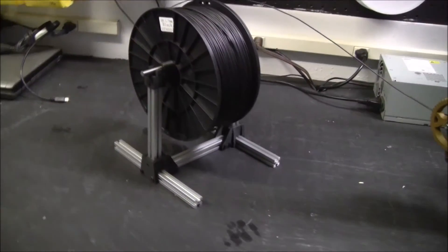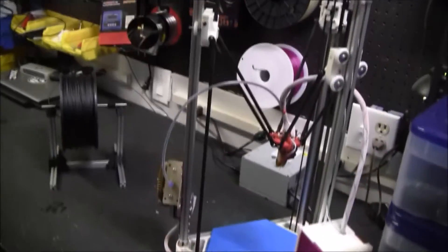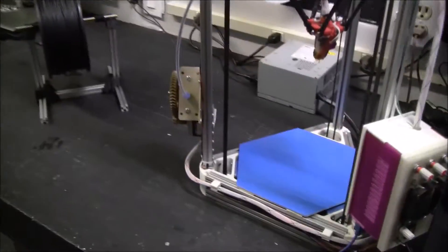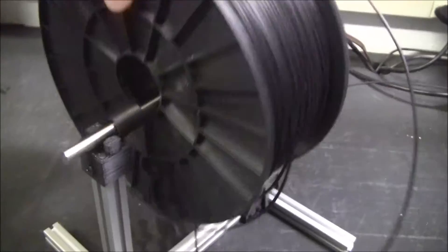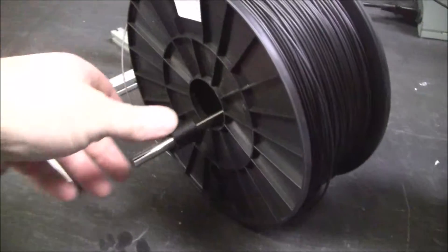I'm going to show you this filament spool holder that I made. I made it specifically to look a lot like the Kossel Mini 3D printer and I had some extra 1515 Mitsumi, so it's pretty easy to mount.